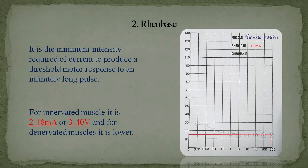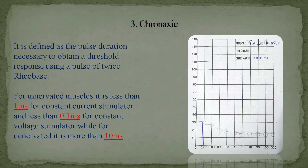Riobase is the minimum intensity of current required to produce a threshold motor response at an infinitely long pulse duration. For innervated muscle it is between 2–18 mA or 3–40 volts; for denervated muscle it is lower than normal. In this case, riobase is 15 mA at 300 ms pulse duration. Chronaxie is the pulse duration necessary to obtain a threshold response using twice the riobase intensity. For innervated muscle it is less than 1 ms (constant current) or less than 0.1 ms (constant voltage); for denervated muscle it is more than 10 ms. In this case, chronaxie at 30 mA is less than 0.01 ms pulse duration.